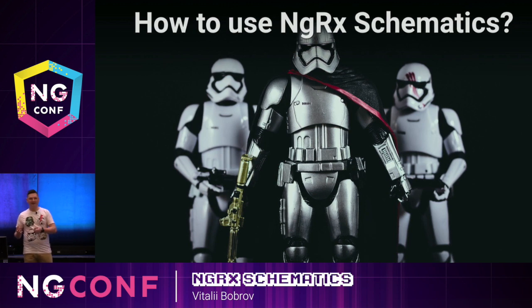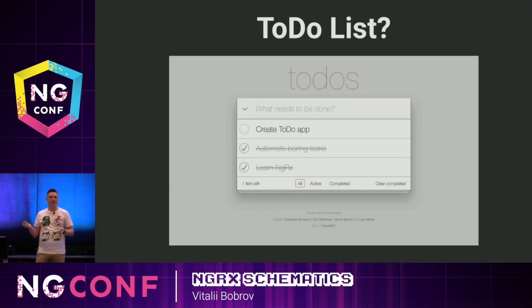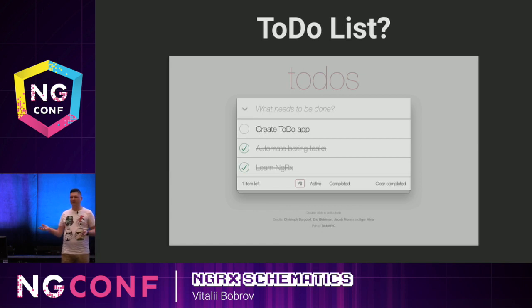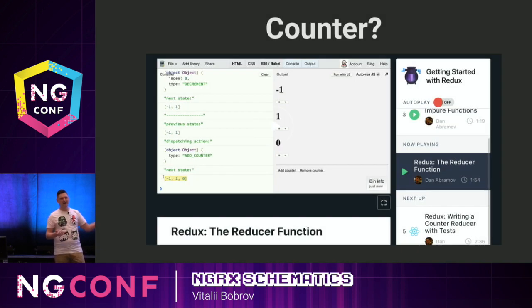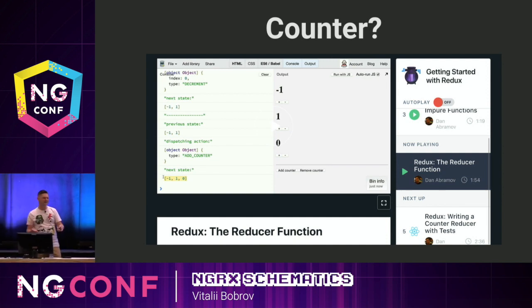The best way to try something is to write some code and get your hands dirty. But what kind of application can we create? Maybe a to-do list app — we usually show those in examples. Or when speaking about Redux and NGRX, we think about counters. Every day at work, you probably create some counter to increase and decrease numbers, right?